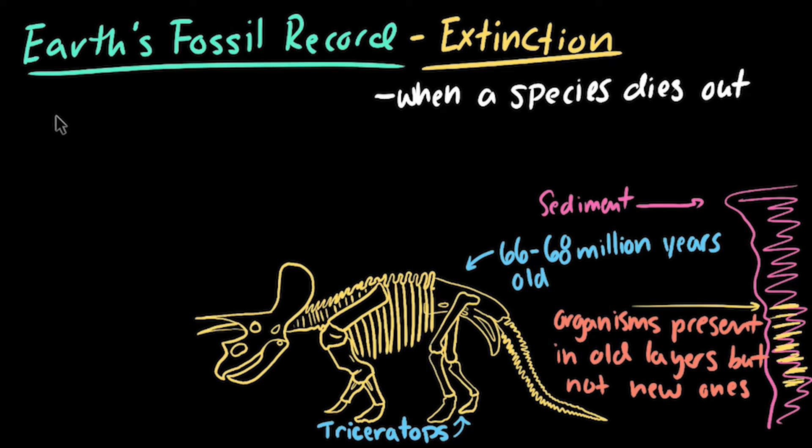The Triceratops is an important example of extinction, as they not only went extinct, but they went extinct due to a mass extinction event.